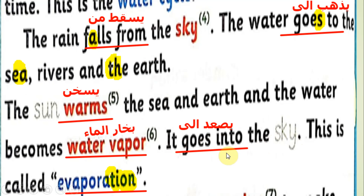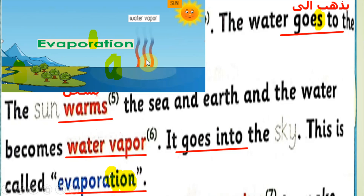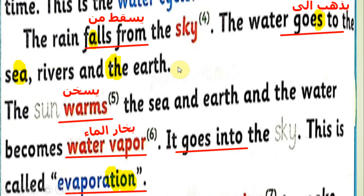'It goes into the sky' — 'it' here refers to water vapor بخار الماء. Water vapor rises into the sky. 'This is called evaporation' — هذه العملية تسمى التبخر. Note the suffix '-tion' always gives a 'shun' sound. As you can see in the picture, water vapor goes into the sky — this whole process is called evaporation.